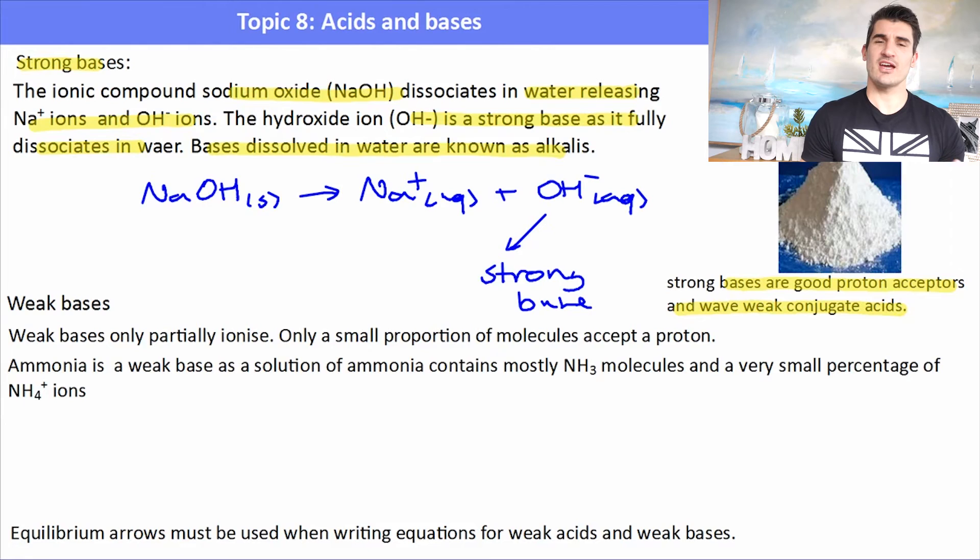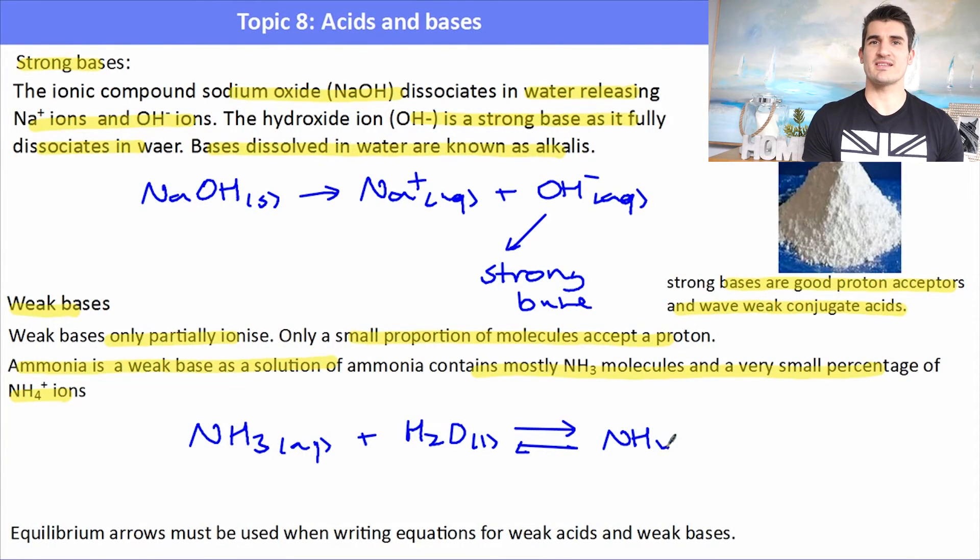Weak bases, on the other hand, they only partially ionize and they are only able to accept a small proportion of protons. The one that you will come up against is ammonia and it can act as a weak base by accepting a proton to form the ammonium ion. For example, ammonia NH3 can react with water to form ammonium. But again, because it's a weak base, we need to include the equilibrium arrows and it will form NH4+ and OH-. Equilibrium arrows must be used when writing equations for weak acids and weak bases. If you don't do that, you'll lose a mark.